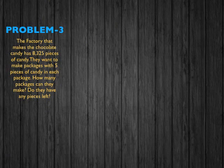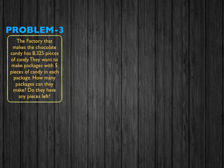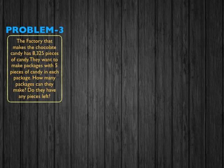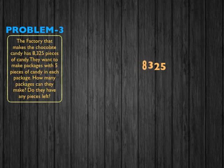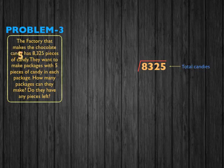For problem three, the factory that makes chocolate candy has 8,325 pieces of candy. They want to make packages with five pieces of candy in each package. How many packages can they make? Do they have any pieces left over? So 8,325 candies divided by five pieces of candy in each package.